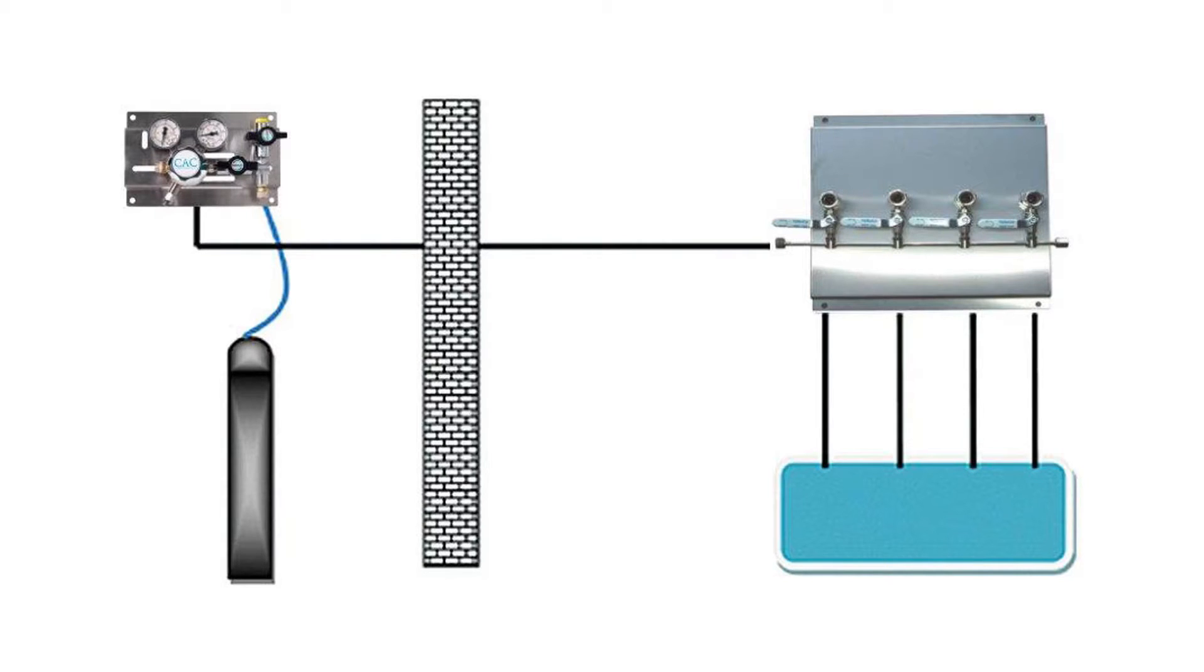A gas distribution system is simply a method of transferring gas mixtures from one location to another through a system of regulators, tubing and outlet panels. This could be from a single gas cylinder or multiple cylinders to one or more testing points or docking stations.